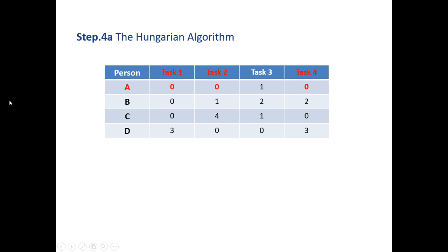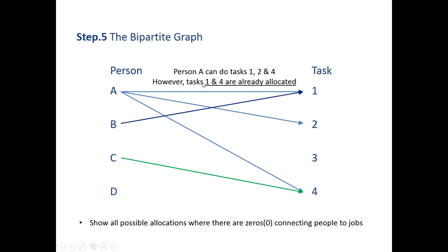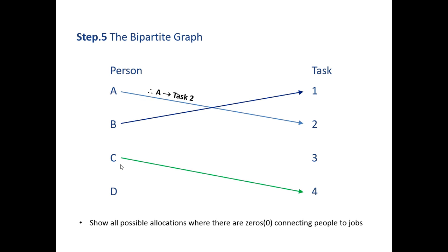Next we look at person A. They can do tasks 1, 2, and 4. However, task 1 has already been allocated to B and task 4 has already been allocated to C. That leaves only task 2 available for person A to complete. And finally, that leaves person D to complete task 3.